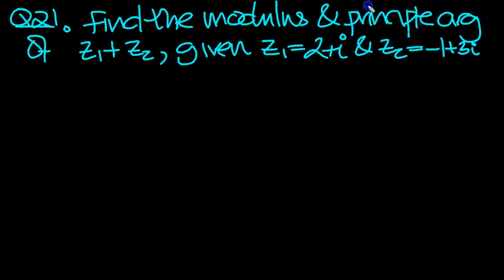Find the modulus and principal arguments of z1 plus z2, given z1 is equal to 2 plus i and z2 is equal to minus 1 plus 3i.